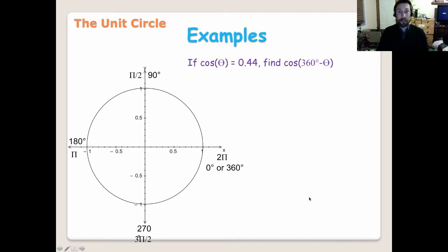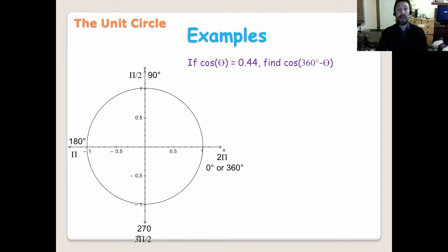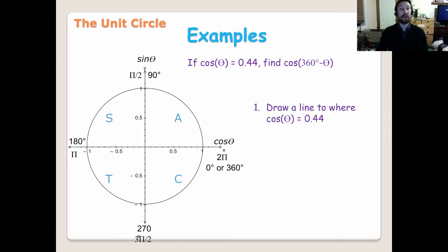Let's do another example. It says: if cos of theta is equal to 0.44, find cos of 360 minus theta. So let's have a think about where cos of theta is actually going to be equal to 0.44. We'll do all stations to Croydon. And whereabouts is cos of theta going to be 0.44? Well, we'll draw a line. We're going to look for 0.44 along here — so it's around about here probably. Draw it up to that point there.